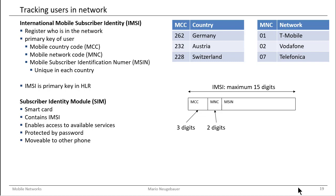The SIM is protected by a password — you have to log in with a password. In some countries you can neglect the password, but in Germany it's recommended to have a password for your SIM. You can also move your SIM to another phone, transferring your identity as a network user to another mobile station, which will then get the identity of the SIM card.